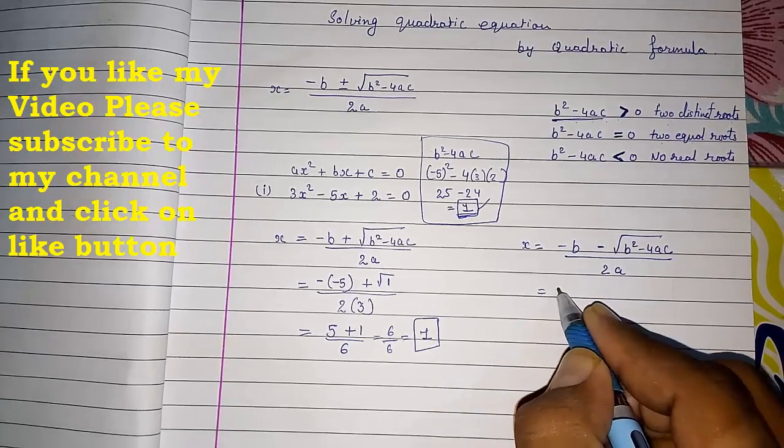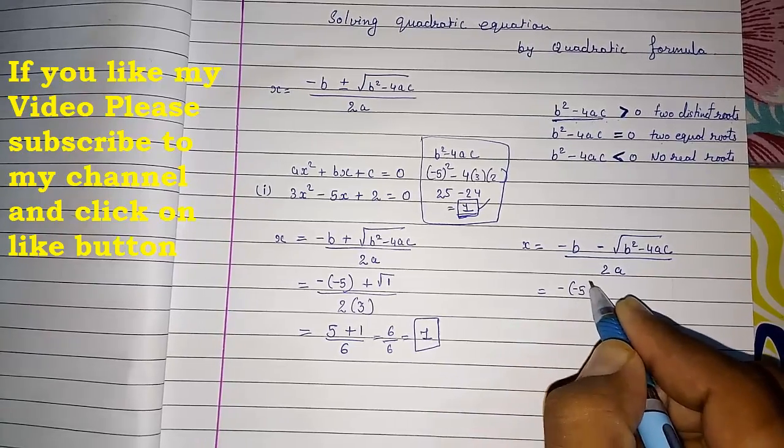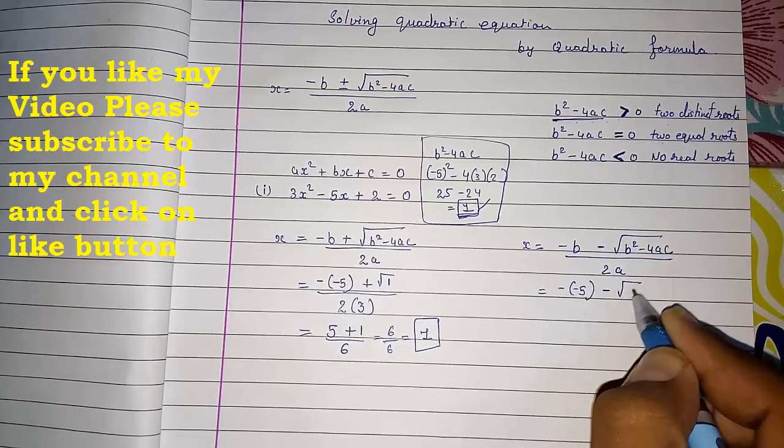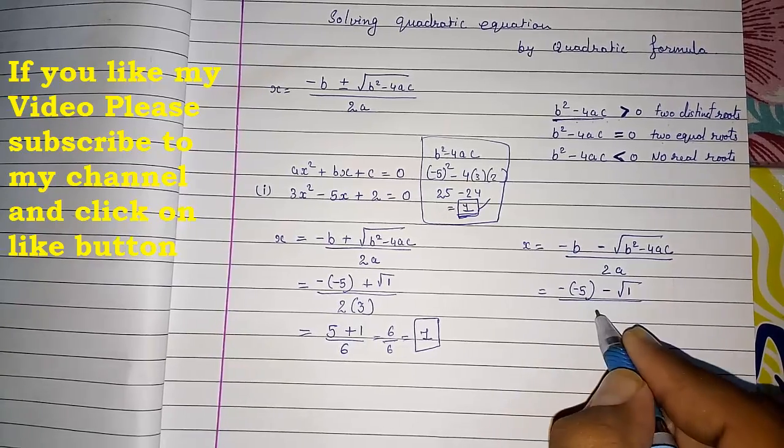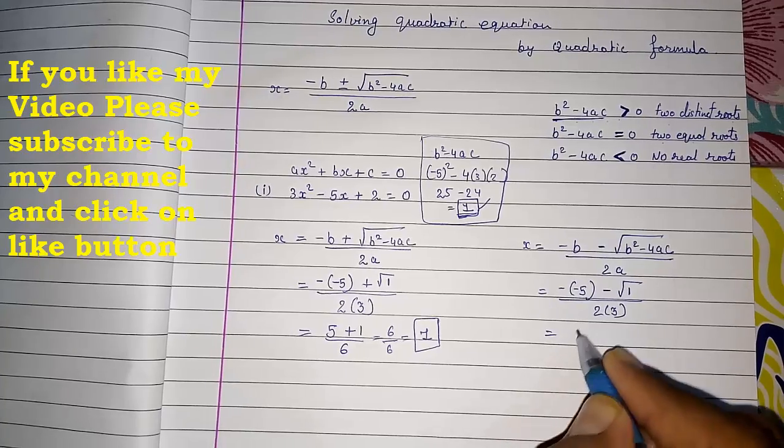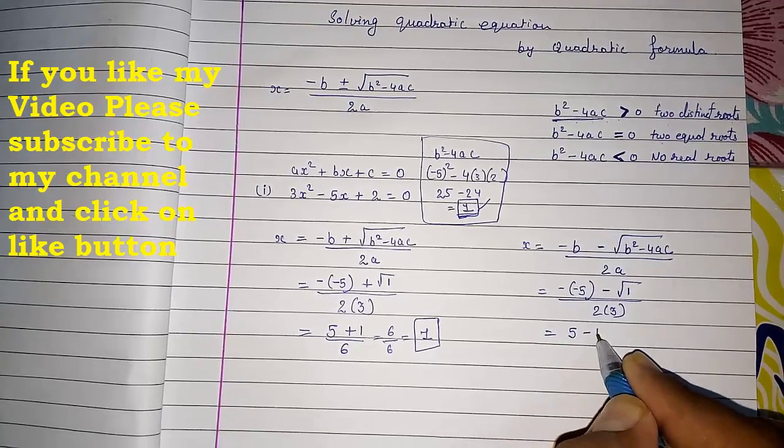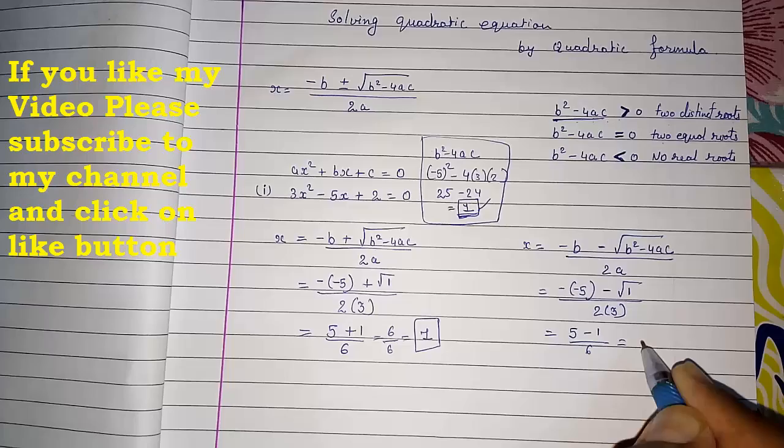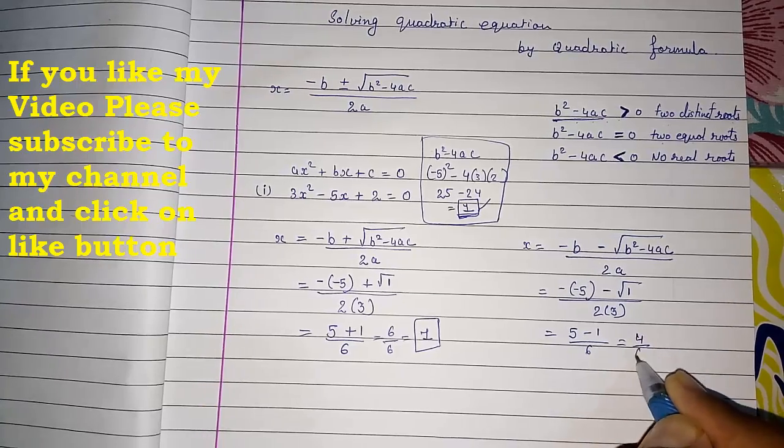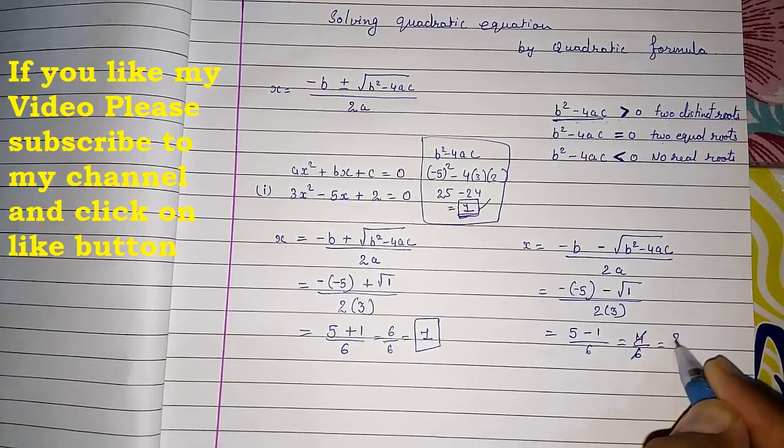Here also we are going to solve. Minus minus 5 minus under root 1 upon 2 into 3. So here we will get 5 minus 1 upon 6. So it will be 4 by 6. By cancellation it will be 2 by 3.